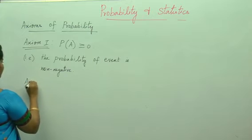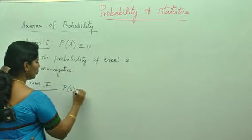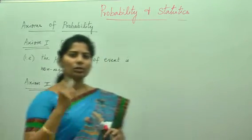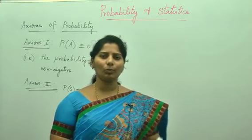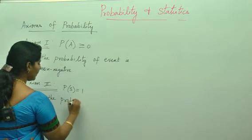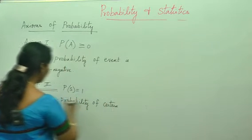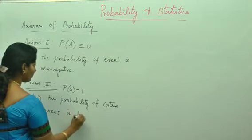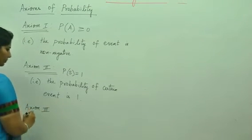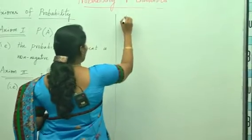Now axiom 2. P(S) equals 1, that is the probability of a certain event is 1. This second axiom we will be using it often in the problems as well as in the theorem proofs. So P(S) equals 1 is the probability of certain event is 1. After completing this I will show you through an example. The third axiom is which is a big one, that is axiom 3.